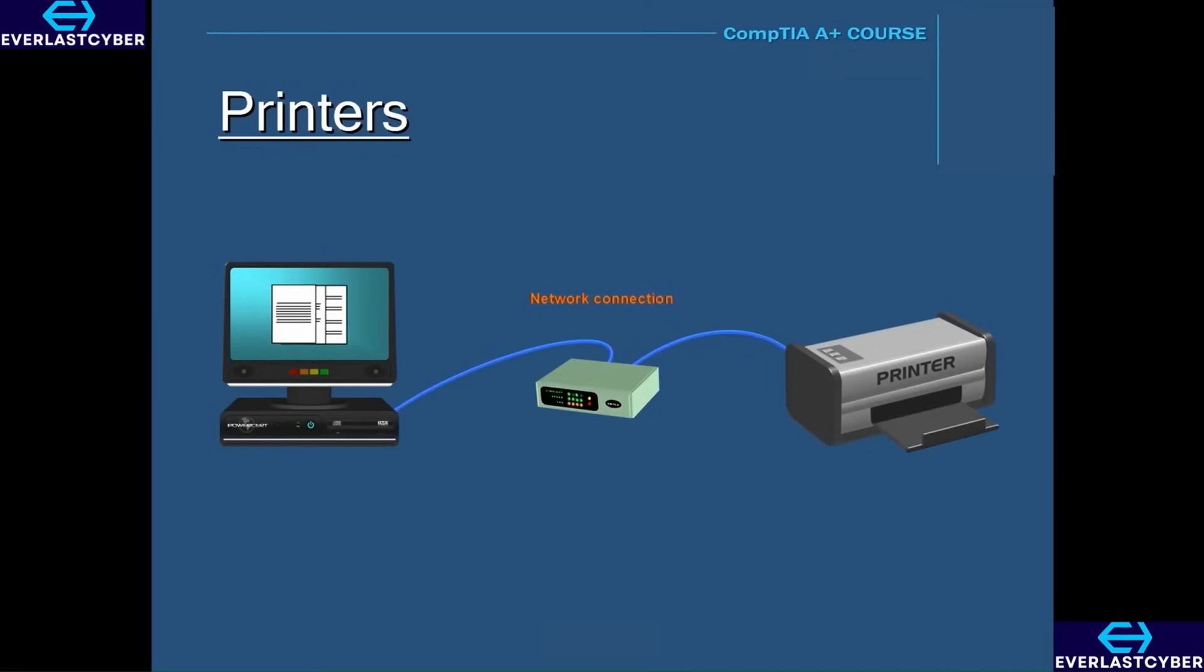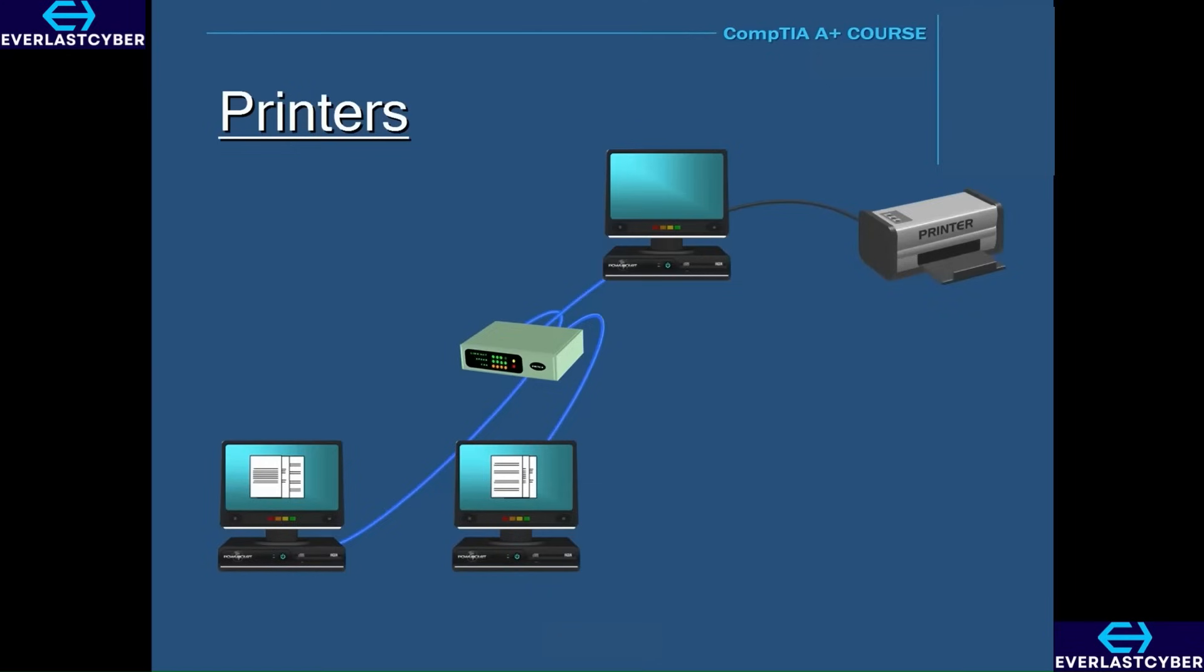But you can also connect a printer through a network if the printer has a network interface, such as an Ethernet port or a wireless antenna. These are known as network printers. Network printers are convenient because the printer can be placed anywhere in a home or office as long as it's connected to the network. Another method of connecting is through a network share. For example, you can allow other computers that are on your network to connect to your local printer by sharing your printer over the network.